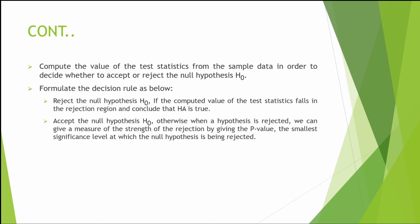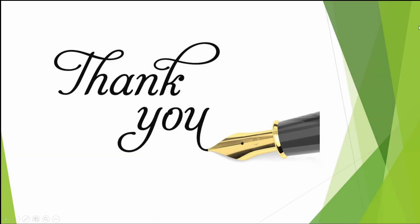Step five: compute the value of the test statistic from the sample data in order to decide whether to accept or reject the null hypothesis. Step six: formulate the decision rule — reject the null hypothesis if the computed value of the test statistic falls in the rejection region and conclude that the alternative hypothesis is true; otherwise accept the null hypothesis. When a hypothesis is rejected, we can give a measure of the strength of rejection by providing the p-value — the smallest significance level at which the null hypothesis is being rejected.